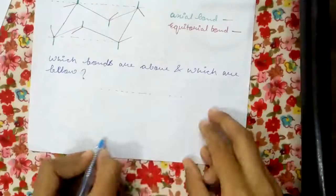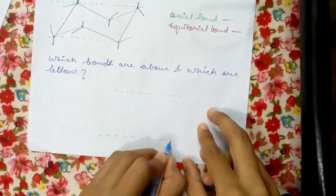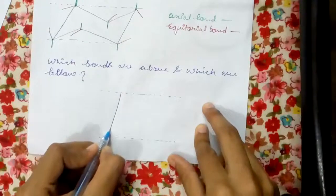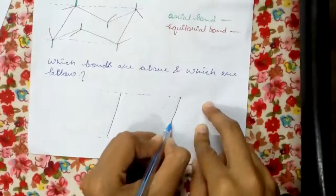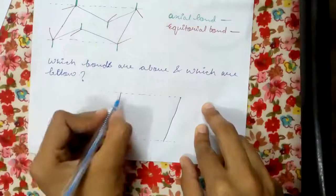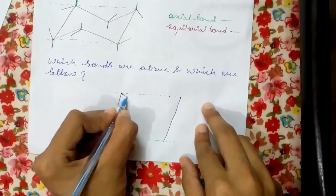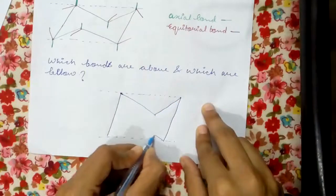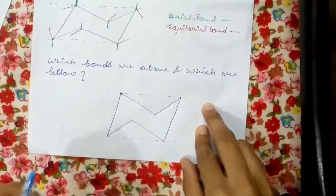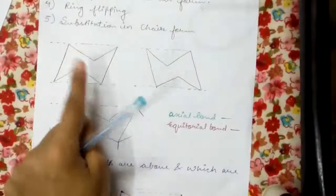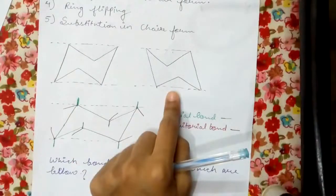Here comes the main part. First we draw two parallel lines - this should be somewhat tilted, not straight. Then like this and this. This is how it looks like. It can be drawn this way or this way also - both are correct.